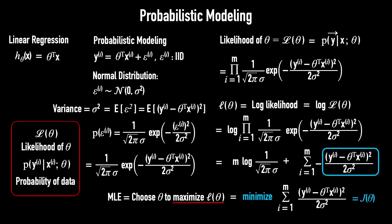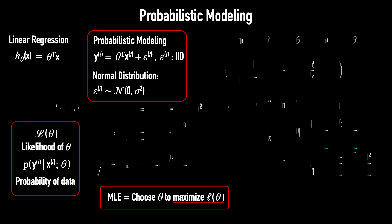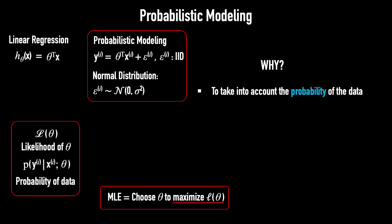So, this little proof shows that minimizing the least squares error is the same as maximizing the likelihood, under the assumptions that the errors are Gaussian and IID. But why did we do this? The purpose is to take into account the probability of the data in our model, so that we can extend this framework to handle non-linear data.